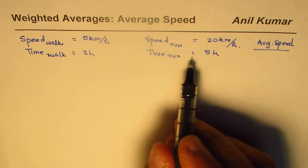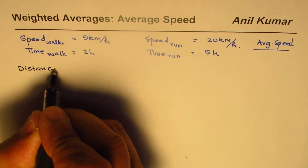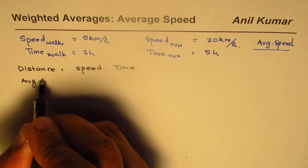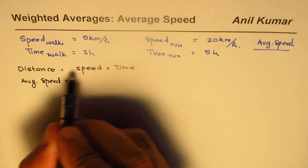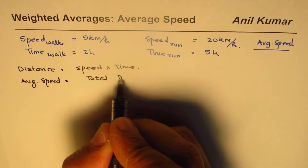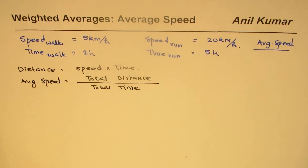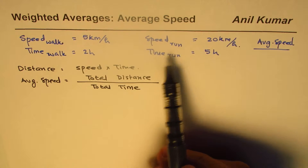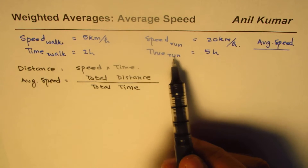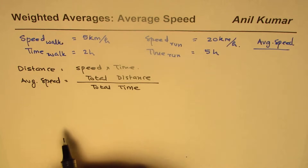We know distance equals speed times time. When we talk about average speed, average speed is total distance divided by total time. So during this morning exercise routine, the person walks for two hours at five kilometers per hour and runs for five hours at 20 kilometers per hour, and we need to find his overall average speed.